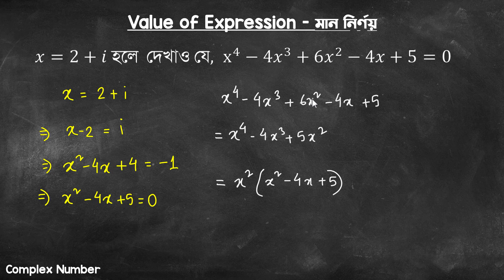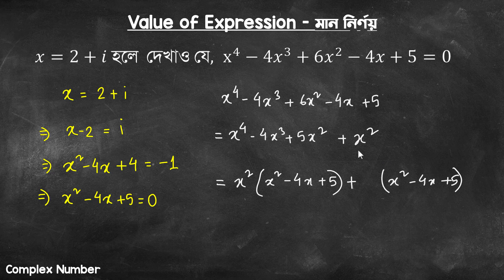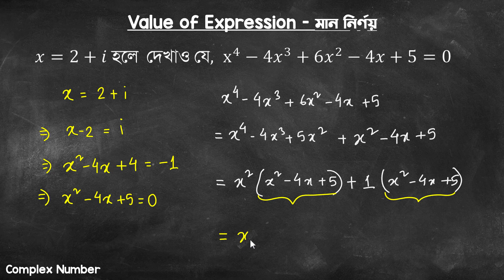x to the power 4 minus 4x cube plus 5x squared — x squared is found. You can find the 5 and then take plus x squared. We have to write plus x squared, which is 1. So x squared minus 4x plus 5. We get the same value. The value of this expression is 0. x squared into 0 plus 1 into 0. The answer is 0.